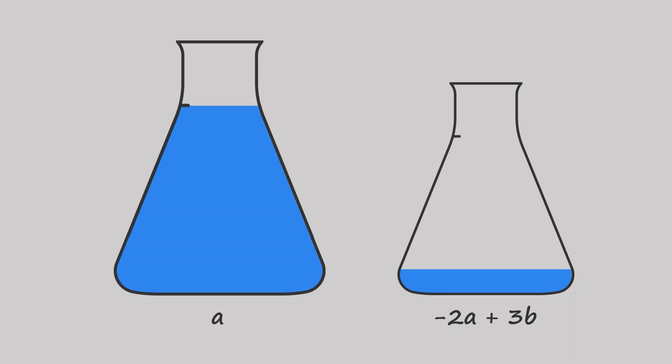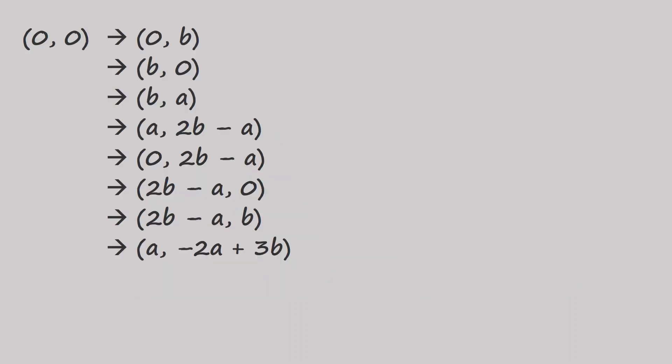Our state here would be the amount of water in each flask, which can be written like this. And our actions are things like pour from A to B, or fill flask A for example. This right here is a summary of all the states that we reached in our investigation.